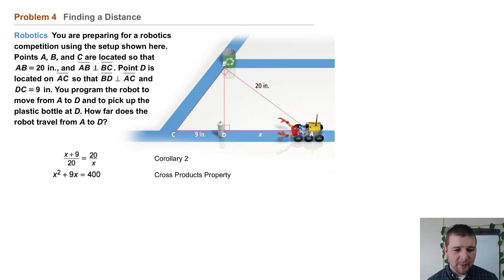First using the cross products property, x squared plus 9x equals 400, then subtracting 400 from each side, factoring, and then using the zero product property.